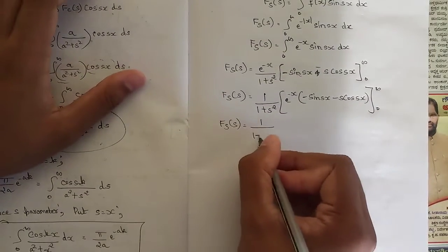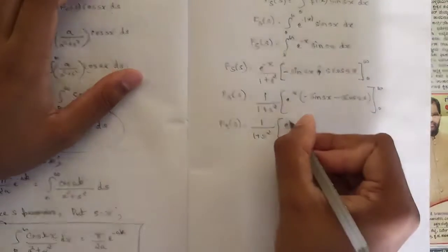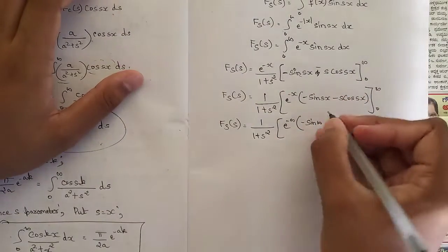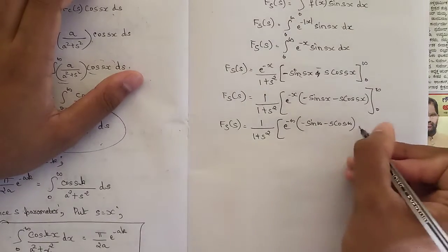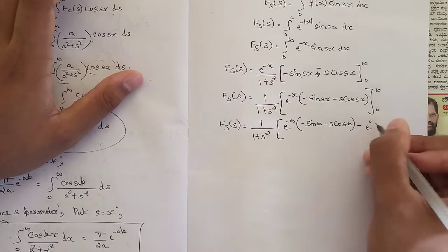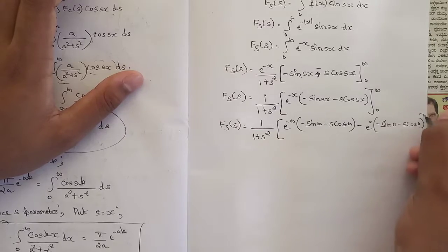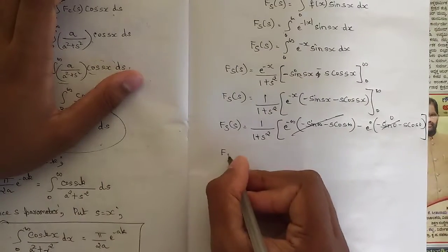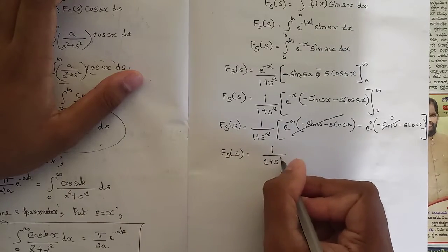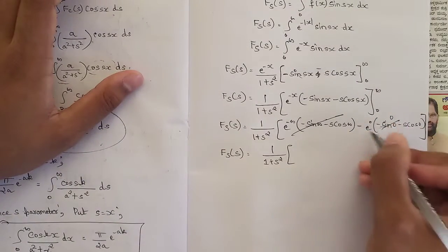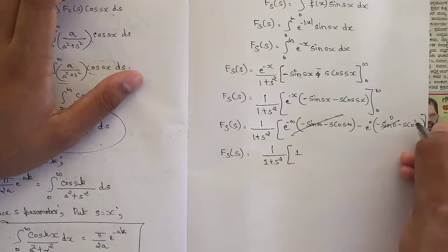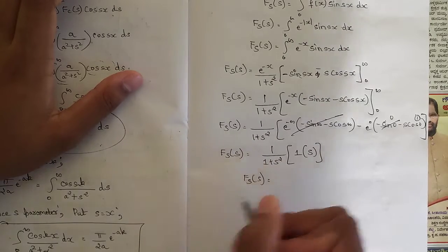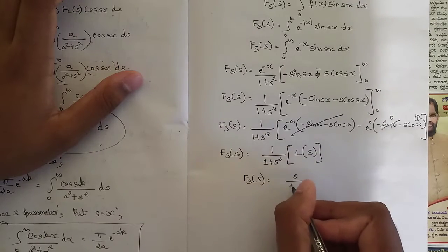Applying the limits: at the upper limit infinity, e^(-∞) = 0 so that whole term is zero. At the lower limit, e^0 = 1, sin(0) = 0, and cos(0) = 1. So we are left with 1/(1+s²) · s, giving us the Fourier sine transform F_s(s) = s/(1 + s²).